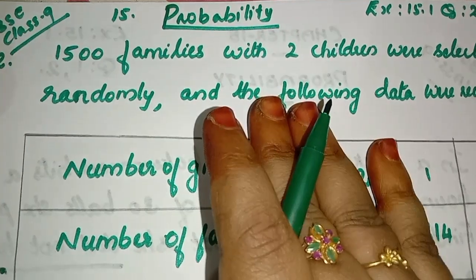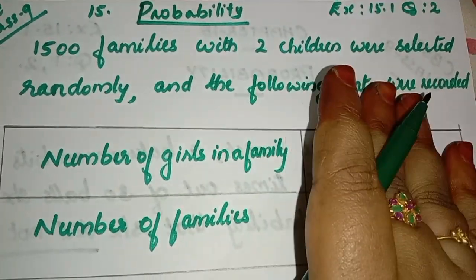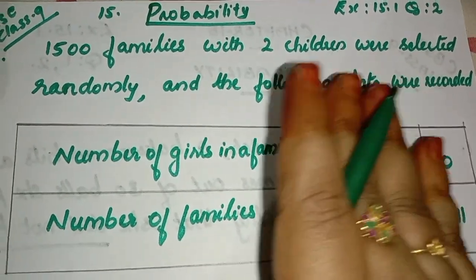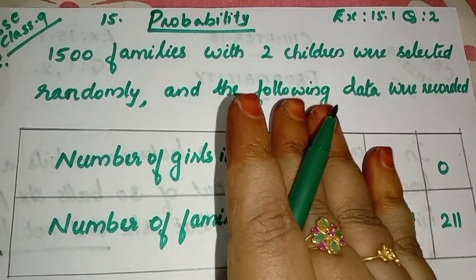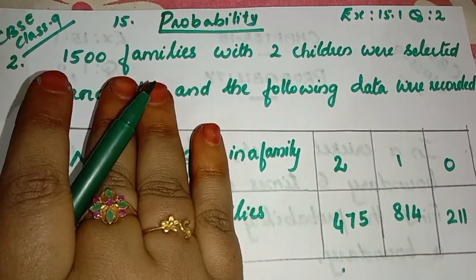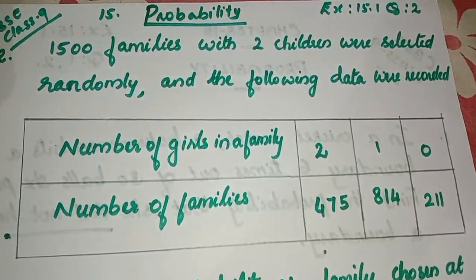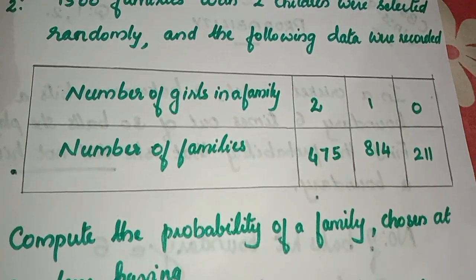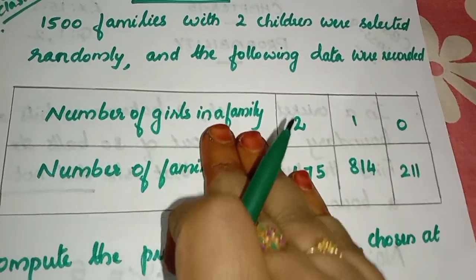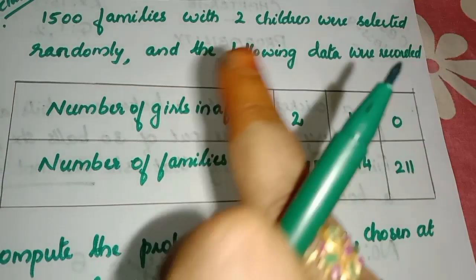The second question is: 1,500 families with 2 children were selected randomly and the following data were recorded. The number of girls in a family: 2, 1, 0.